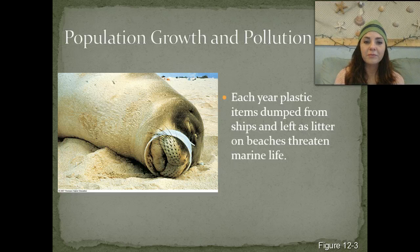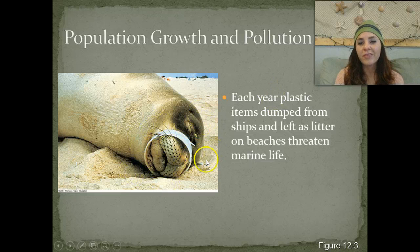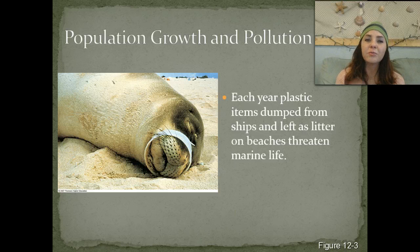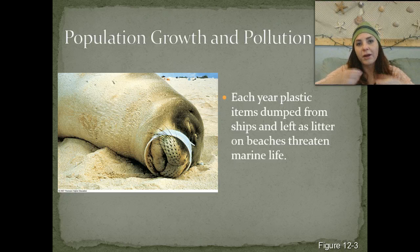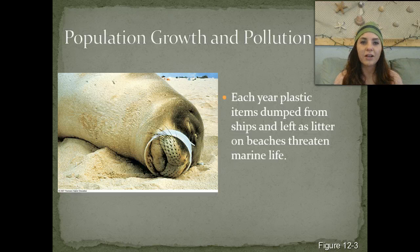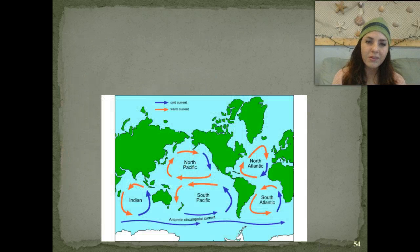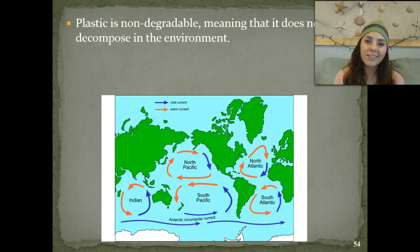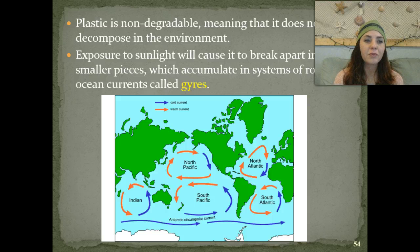This is another example of plastic harming marine mammals—a seal that had plastic wrapped around its nose. Each year, plastic items dumped from ships and left as litter on beaches threaten marine life everywhere. Six-pack plastic containers can get wrapped around limbs and necks, or be swallowed. Plastic is non-degradable, meaning it doesn't break down or decompose in the environment like other substances do. Exposure to sunlight causes plastic to become brittle and break apart into smaller pieces.